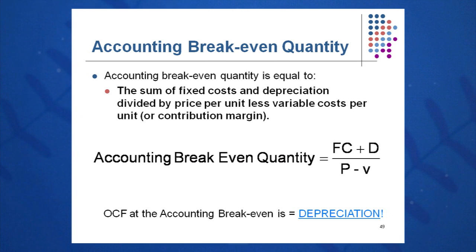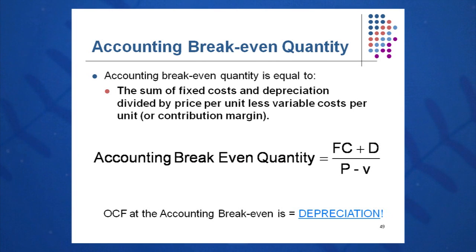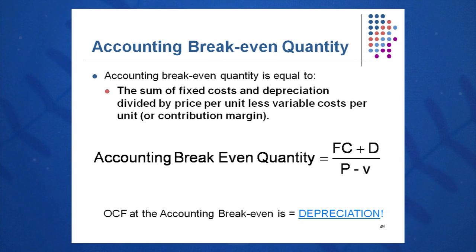Accounting breakeven quantity equals fixed cost plus D (depreciation) over P minus V. This takes the general formula — fixed cost plus OCF over P minus V — and we can prove that at accounting breakeven, OCF equals depreciation. Using the traditional OCF calculation: EBIT plus D minus T = zero plus 200 minus zero = 200. So OCF equals depreciation of $200. Therefore, in the accounting breakeven formula, fixed cost plus OCF over P minus V becomes fixed cost plus D over P minus V. Key point: OCF at the accounting breakeven equals depreciation.